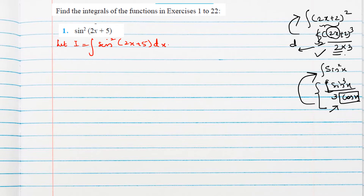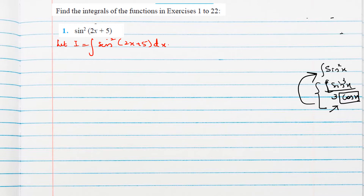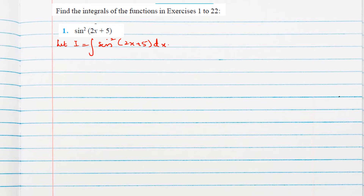So what do we do here? We will use an identity. For such cases — sin², sin³, sin⁴, sin⁵ — you can use a trigonometric identity.